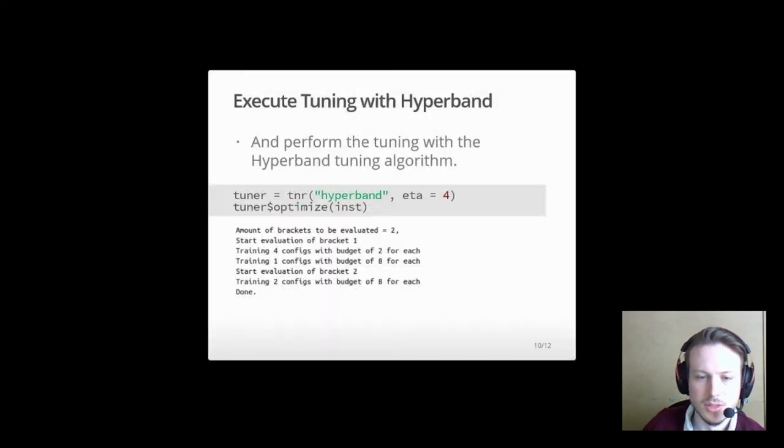Next, we initialize a new tuner with eta equals 4 and then optimize the previously defined tuning instance. During the run, information about the bracket layout is printed to the console, like it can be seen here. Two brackets are evaluated, the first with 4 configurations, the second with only 2.